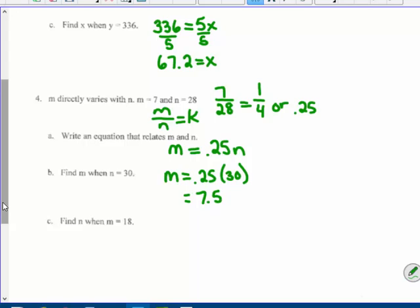Find n when M is eighteen. So eighteen equals twenty five hundredths of what n? Well, I'm going to divide by twenty five hundredths. And I get that seventy two equals n.